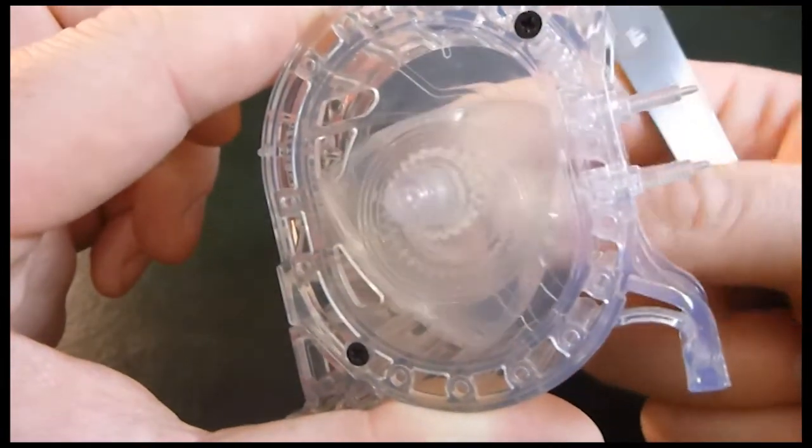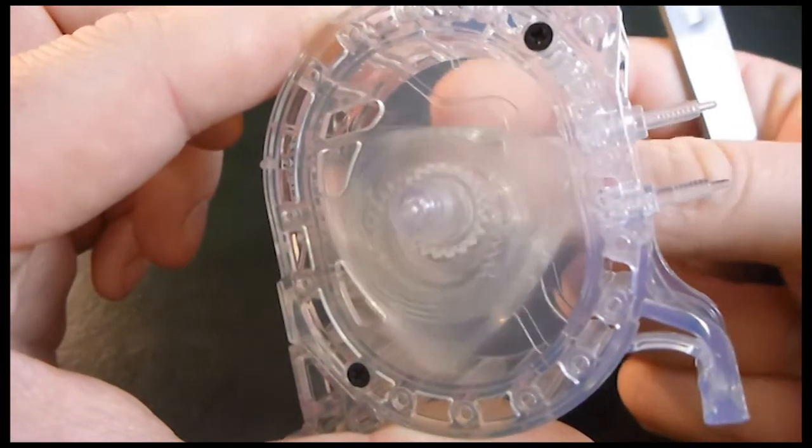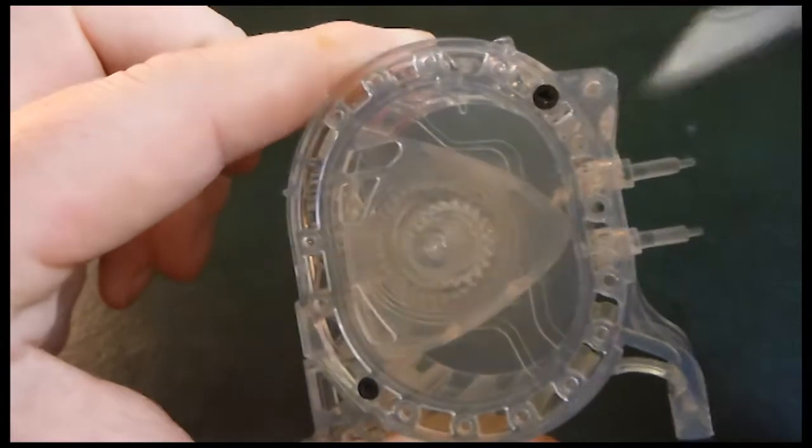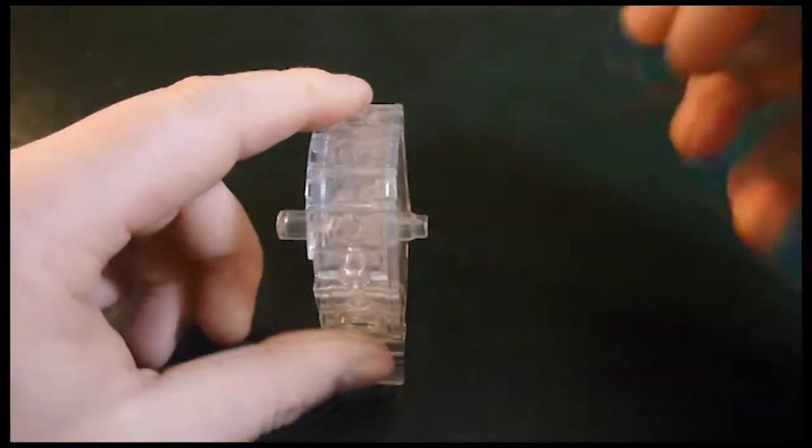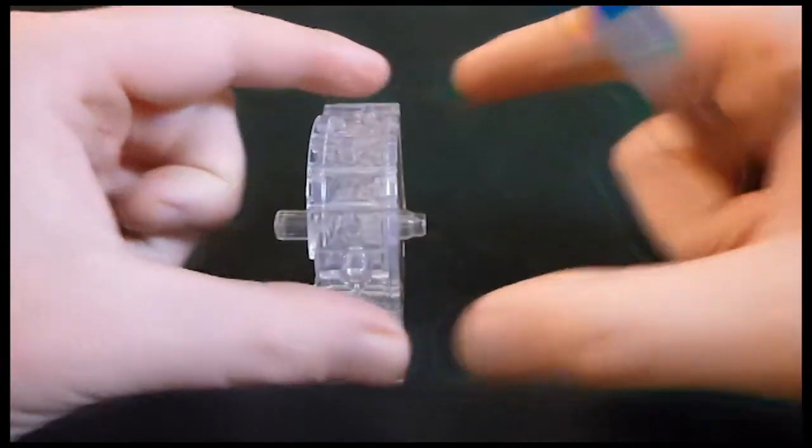So we've got intake, compression, ignition, exhaust and it spins really really quick and you can actually have three of these in a row and I think the RX8 has two more of these and so it has three as a stack.